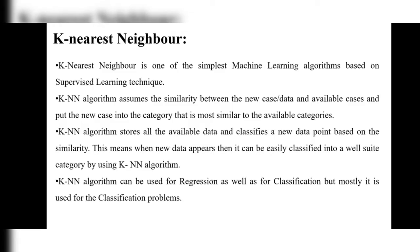Based on similarity, it will separate the data. When data appears, it can be easily classified into a well-suited category using the KNN algorithm. We can clearly find to which class the data belongs. KNN can be used for regression as well as classification, but it is mostly used for classification problems.